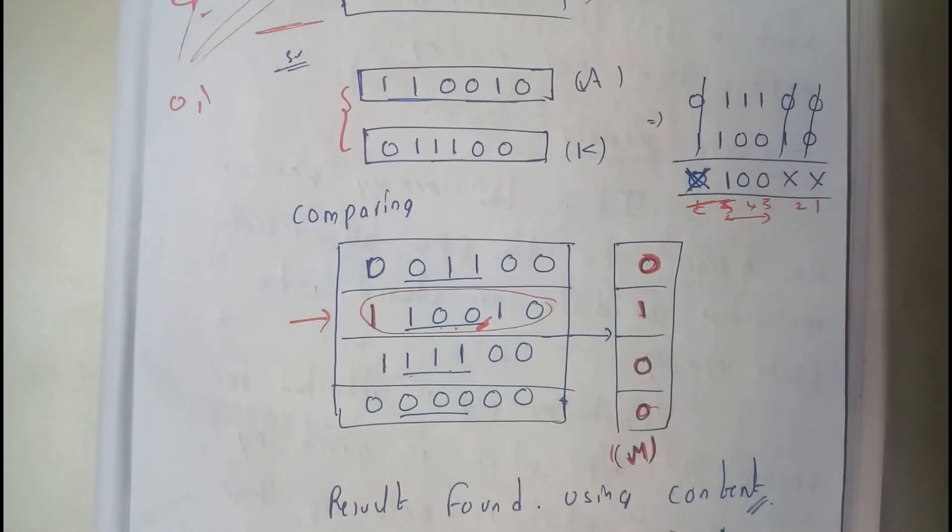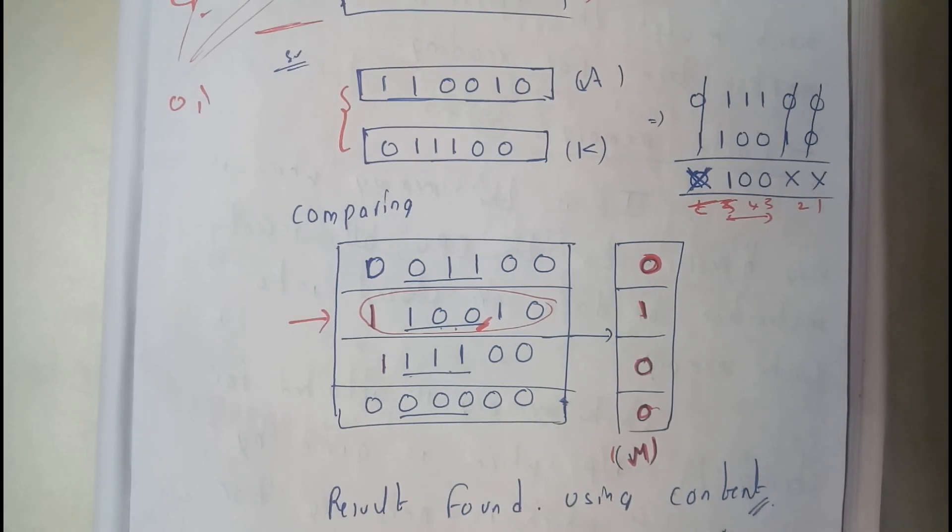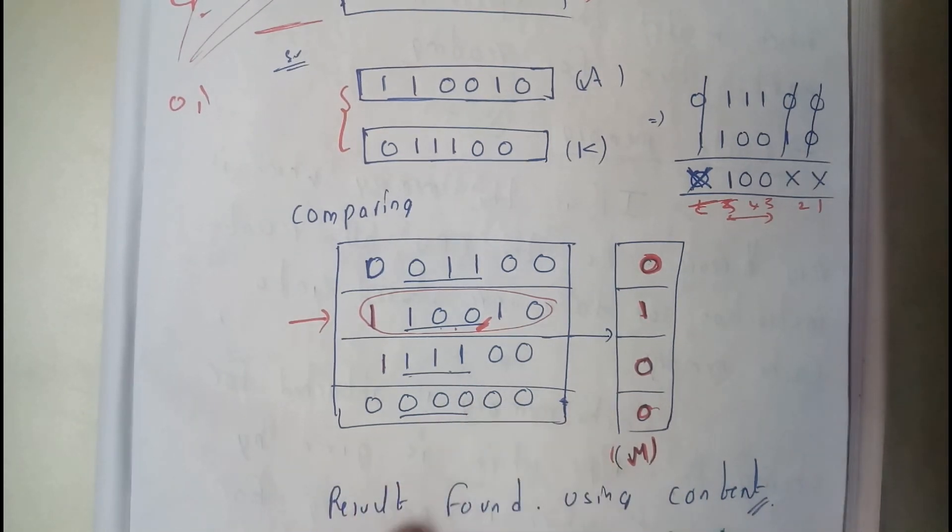So basically the major plus point of this is that even after finding a particular value that is exactly matching, it searches for further values. Because there might be repeated values. You cannot justify that the first value is a fixed value. There might be any repeated value again. So that is the major advantage in this.